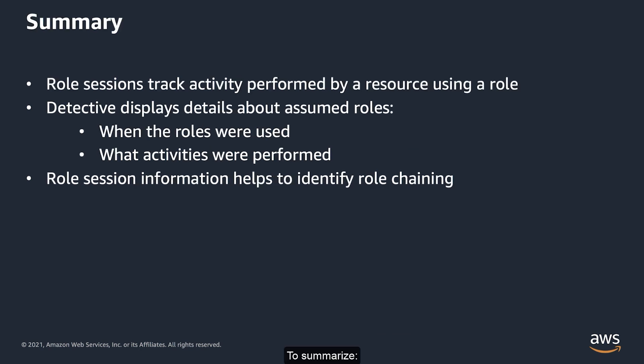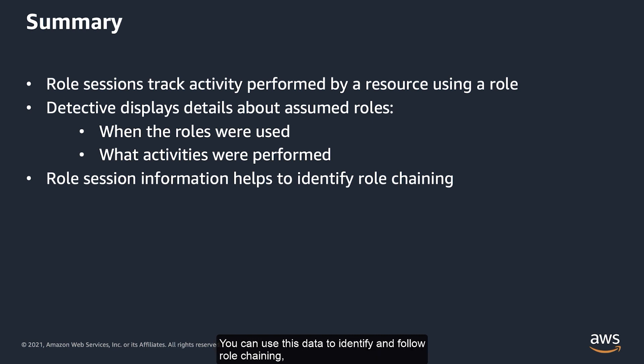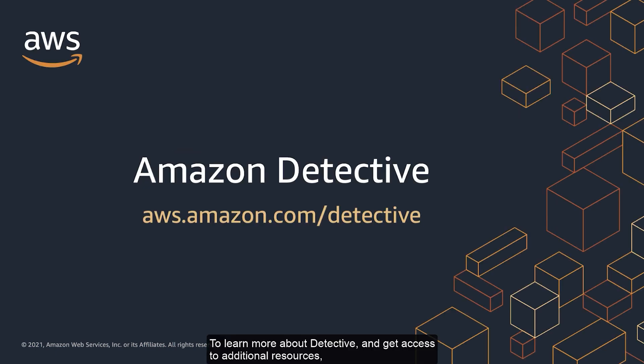To summarize, Detective uses role sessions to track activity performed by a resource using a specific role. Detective displays details about roles that are assumed, including the time period when the roles are used and the activities that are performed. You can use this data to identify and follow role chaining, where a resource assumes multiple roles in sequence. Role chaining can be used to try to hide activity. To learn more about Detective and get access to additional resources, see the Detective product page at aws.amazon.com/detective.